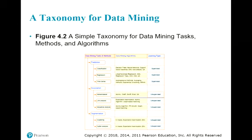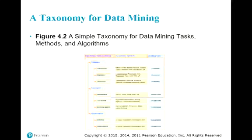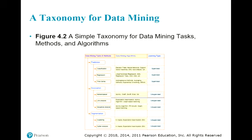Under market basket analysis you have methods including A Priori, 1R, and 0R. In the categories below, you have sequence analysis, which is similar to time series but in a different way. We also have FP-growth, where FP stands for Frequency Pattern. You are looking at the pattern or sequence of that pattern to predict the future — something like a categorical smoothing average analysis.